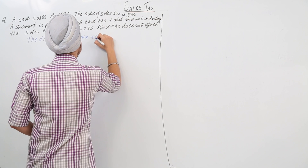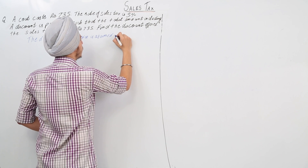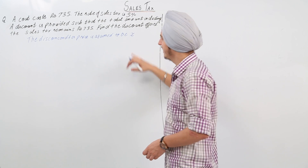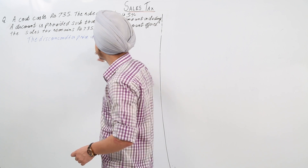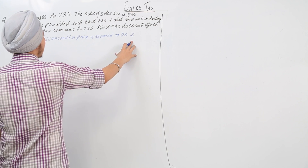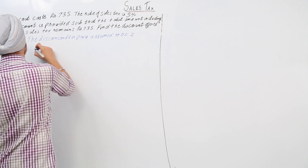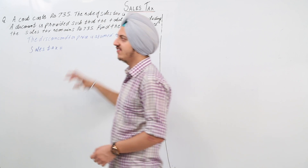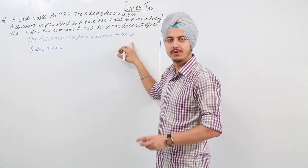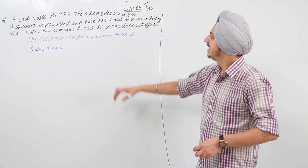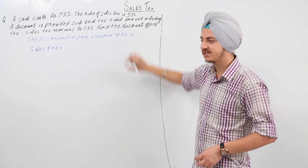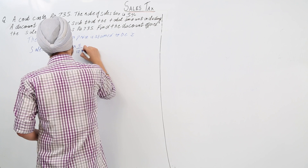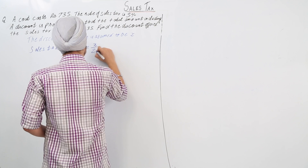Let the discounted price be x. So the price after discount is x. The sales tax is given as five percent, and the sales tax is always calculated on the selling price — the selling price is the discounted price. So the sales tax will be equal to five percent of x, which means x into five upon hundred, which is equal to x by 20.